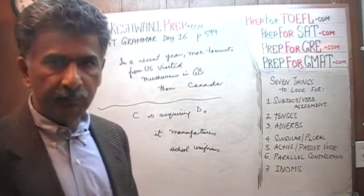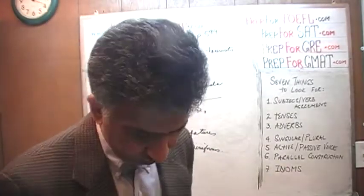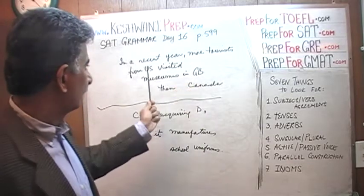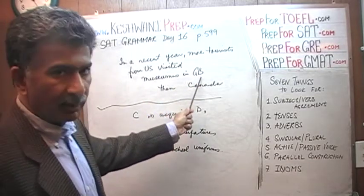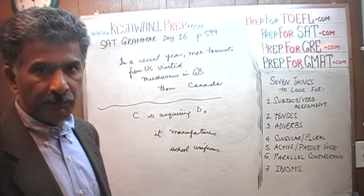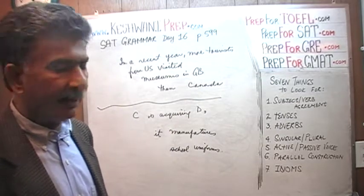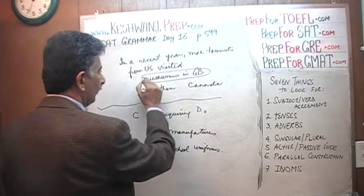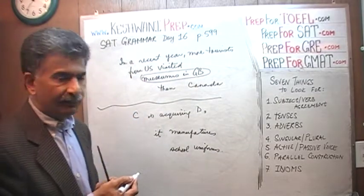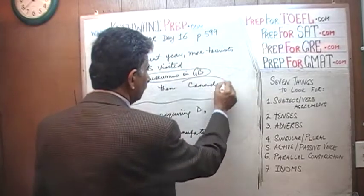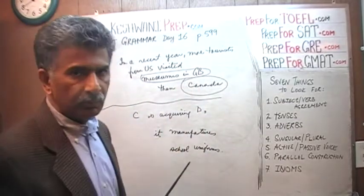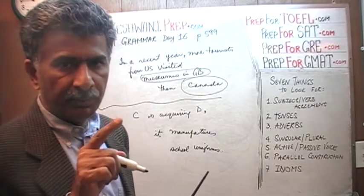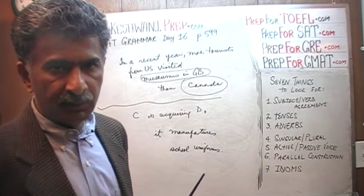Number 1 is very simple and straightforward. It says: 'In a recent year, more tourists from the US visited museums in Great Britain than Canada.' The problem with this sentence is that we are comparing museums in one country to the other country itself. We cannot compare museums in one country to the other country — we have to compare museums to museums.